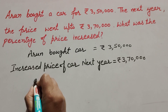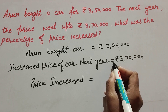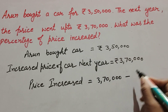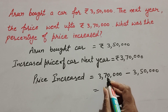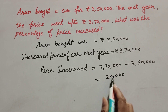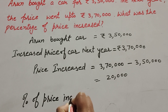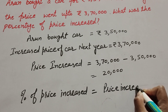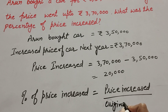We find the increase percentage in price. Price increased in the next year: the price of car 3 lakh 70,000 minus initial price 3 lakh 50,000. So 3 lakh 70,000 minus 3 lakh 50,000 gives us 20,000. The price increased by 20,000 in the next year. Percentage of price increase equals price increased over initial price of car multiplied by 100.